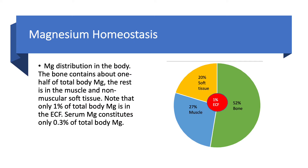Of the total body magnesium, only 1% exists in the extracellular fluid, and 0.3% is in the blood, mostly in the red blood cells. About half of the body magnesium is in the bones, about 20% is in soft tissues, and about a quarter resides in the muscles.